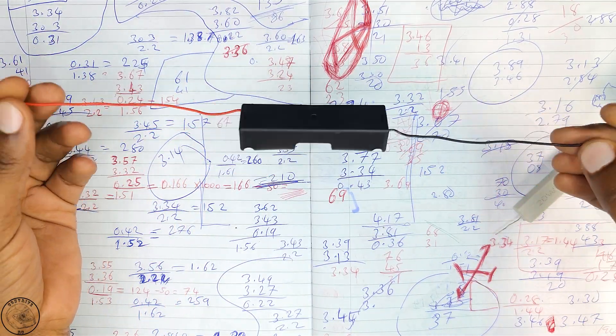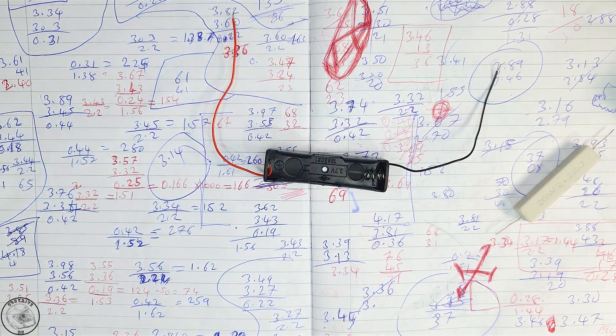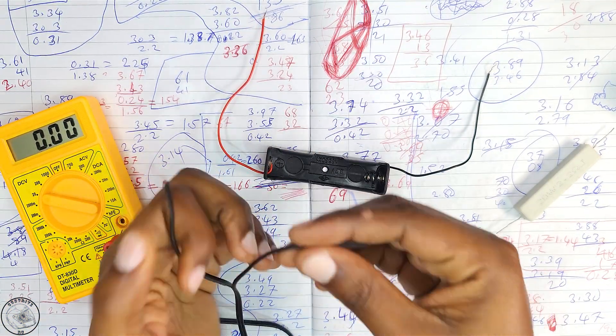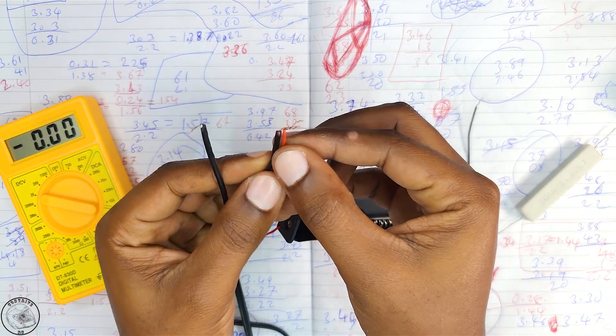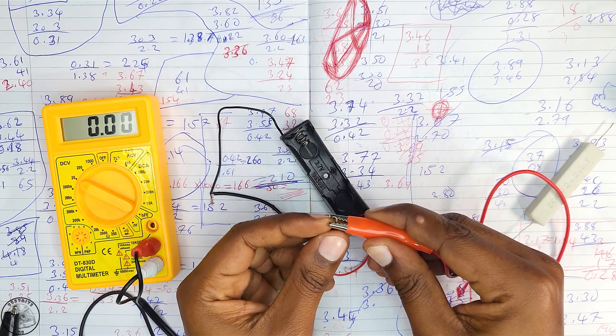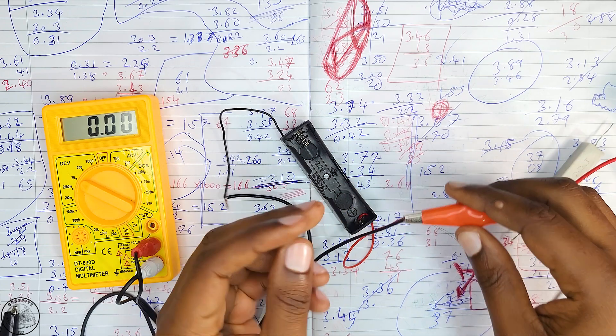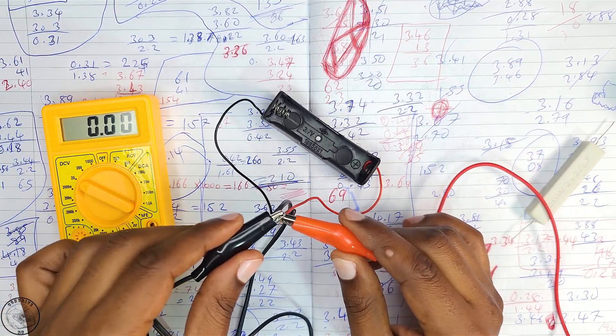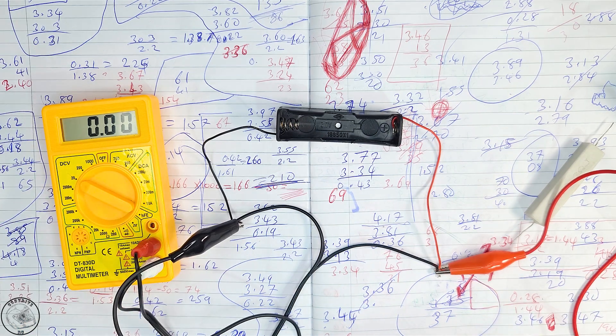The first step involves connecting the battery holder case to the multimeter. I used stripped wires from the multimeter with crocodile clips, which I secured with tape to prevent any accidental short-circuiting.